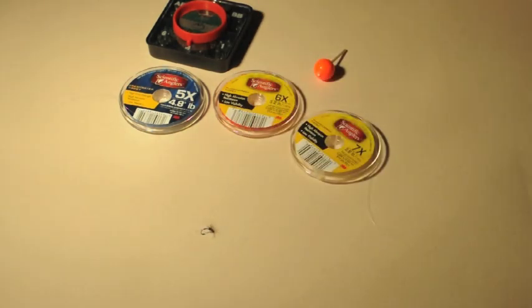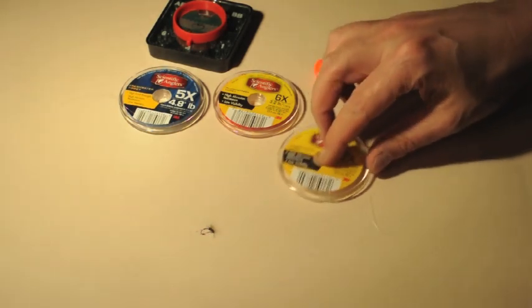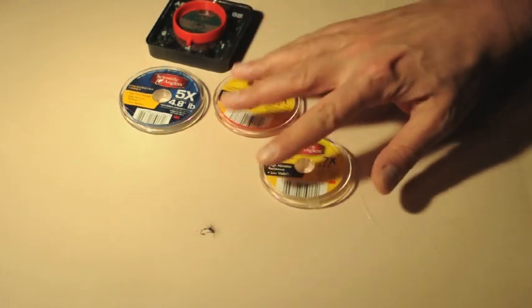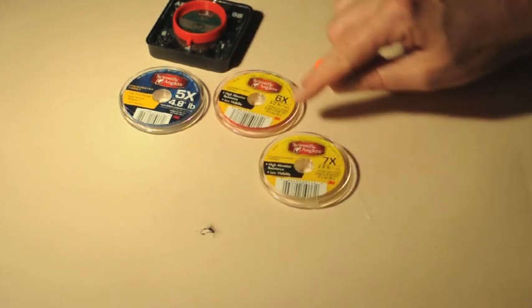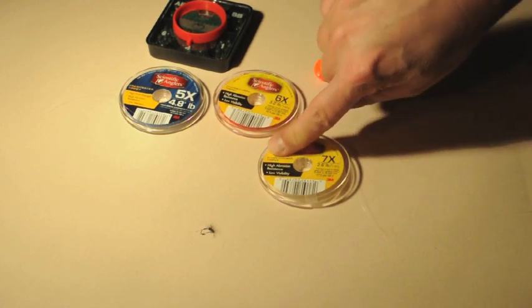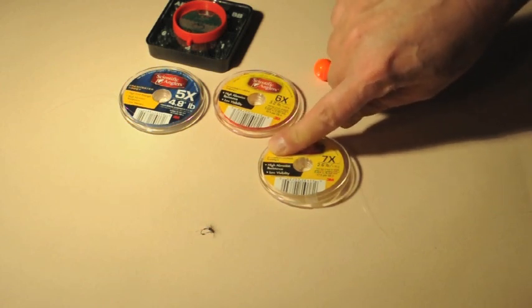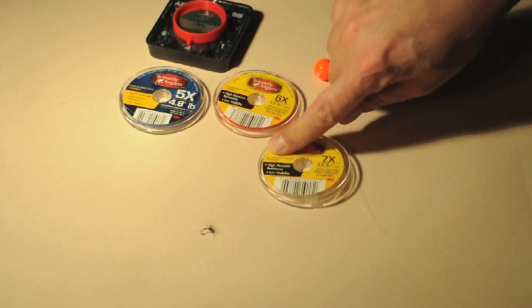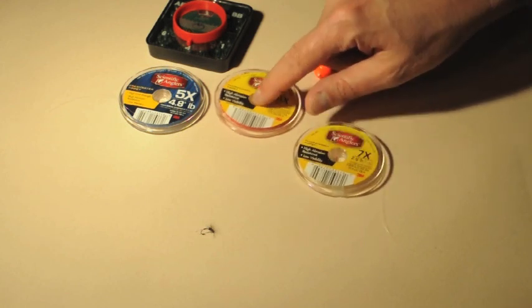You're going to take some light tippet. Actually, not these, to tell you the truth. Even though this is 7x and 6x, this is fluorocarbon. Fluorocarbon is real hard for fish to see, but it also sinks, and that's going to be pulling your dry fly down.